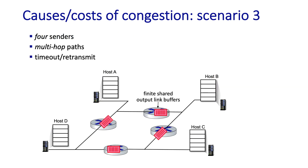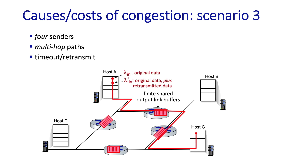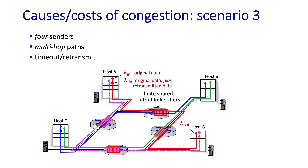In our third scenario, we consider four senders and four receivers with each sender-receiver pair separated by two routers. The red flow now crosses two hops, and we again distinguish lambda_in from lambda_in_prime. The red flow shares a link with the blue flow at one hop and the green flow at another. For a red flow packet to be successfully transmitted from host A to host C, it must be successfully forwarded by both routers. If a red packet makes it through the first router but is lost at the second, it must be retransmitted and cross that first router again — wasting its link buffering and transmission capacity.